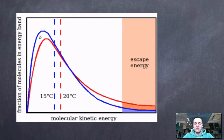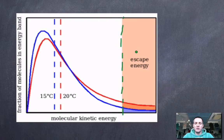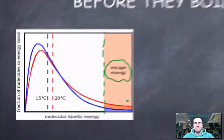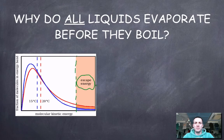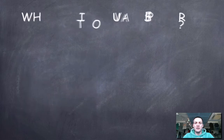At a low temperature (the blue curve) or even at a higher temperature (the red line), there are always particles that have quite a lot of energy. If this energy threshold is the amount needed to escape from the liquid and evaporate, we can see there will always be particles that can evaporate. This explains why all liquids will evaporate before they boil.